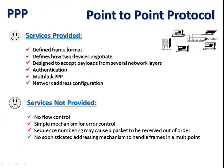Additional services provided are authentication, multi-linked Point-to-Point Protocol, and network address configuration. Authentication is used when two unknown points want to access the internet or share information — to identify and validate the user accessing the server. Multi-link PPP handles collection and transfer of data between different points, and network address configuration allows a user to connect to the internet with a temporary network address.